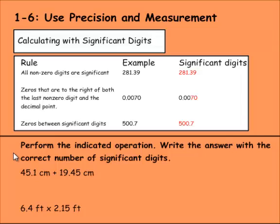Let's look at these problems, then. We need to perform the indicated operation. Write the answer with the correct number of significant digits. To determine the correct number of significant digits, you need to find the number with the least amount of them. So for this one, we have 45.1 and 19.45. 45.1 has only three significant digits.